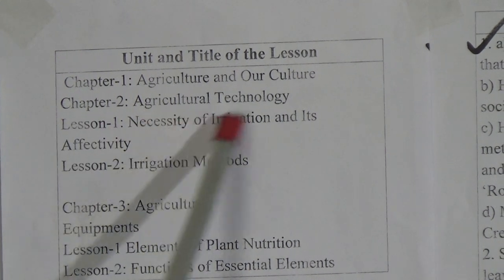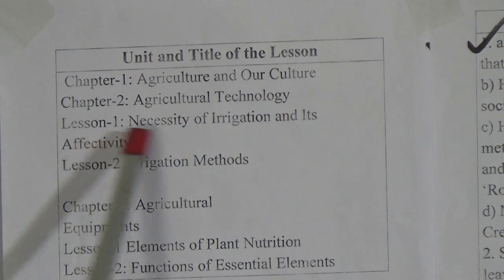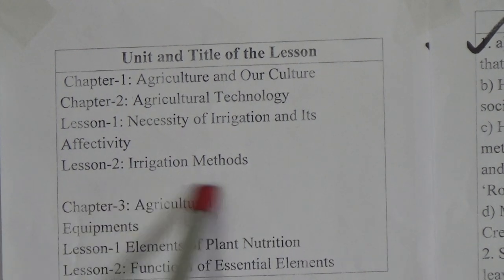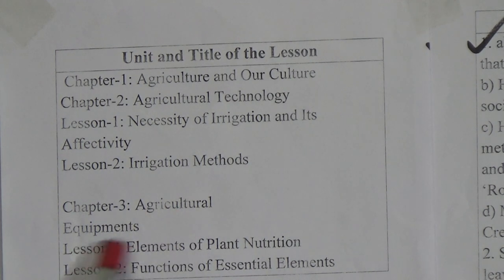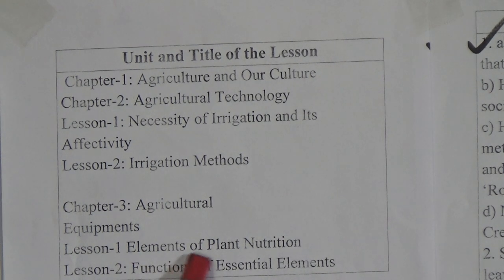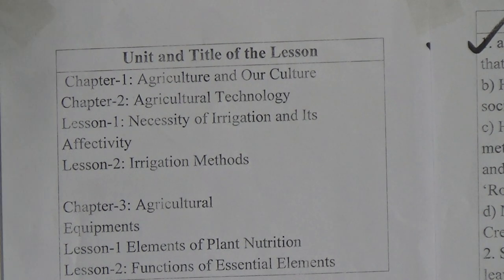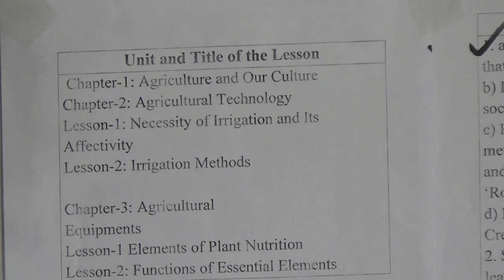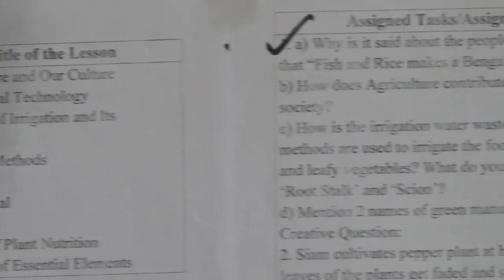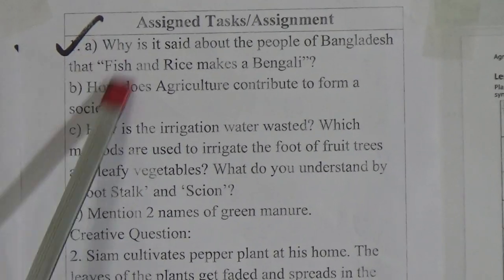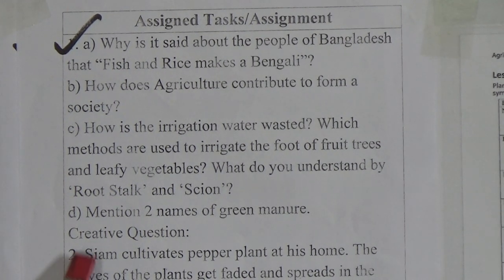Chapter 2, Agricultural Technology. Lesson 1: Necessity of Irrigation and its Effectivity. Lesson 2: Irrigation Methods. Chapter 3, Agriculture Equipments — there are two lessons. Lesson 1: Elements of Plant Nutrition. Lesson 2: Functions of Essential Elements. In our previous class, that means in Part 1 discussion, we discussed question number 1. Today we will discuss question number 2.